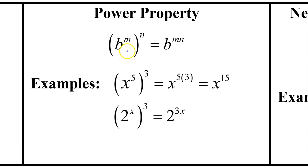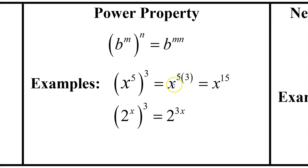The power property says that if you raise a power to another power, you multiply those exponents. So x to the fifth power to the third power is going to give you x to the 15th power, as you multiply. And 2 to the x power cubed would be 2 to the 3x power — you multiply these exponents.